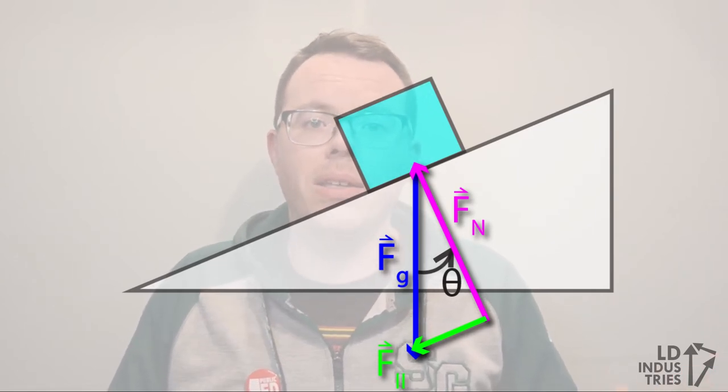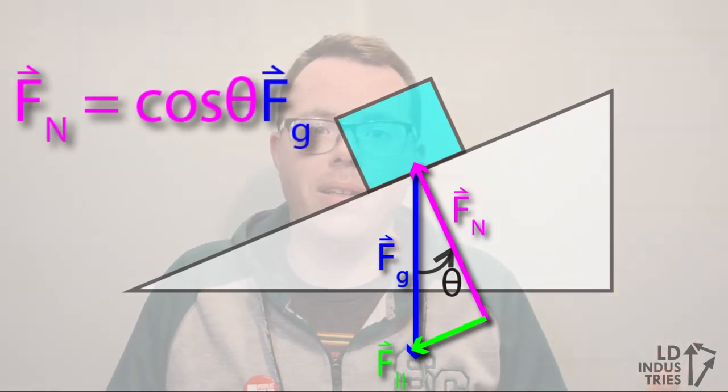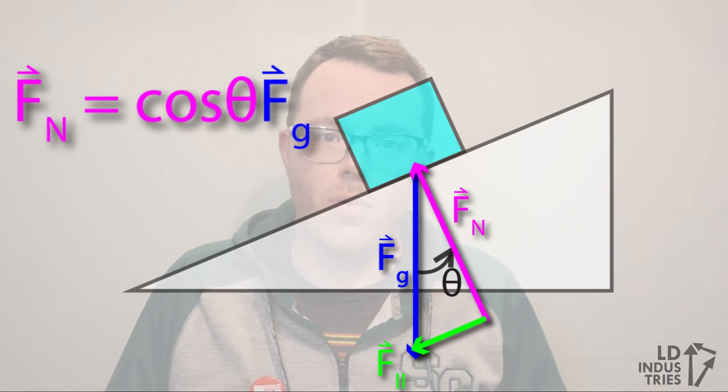And we can calculate the adjacent side, which is the normal force, by taking the cosine of the angle of incline and multiplying that by the force of gravity.